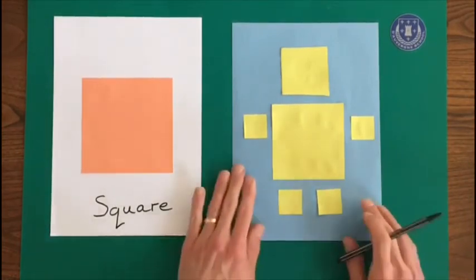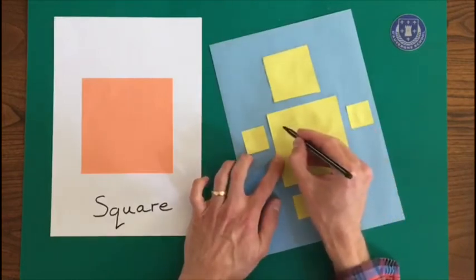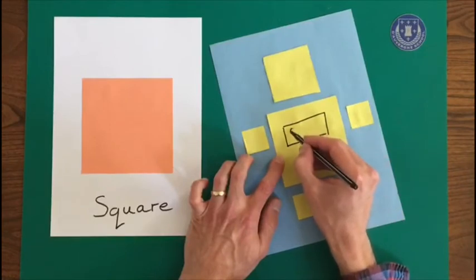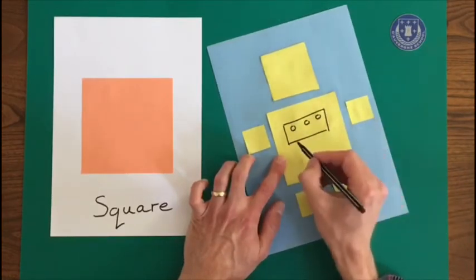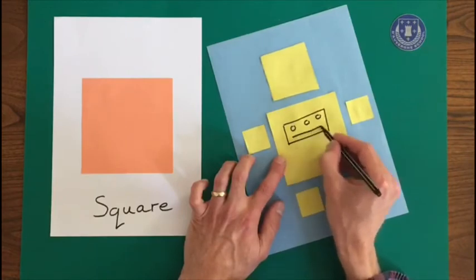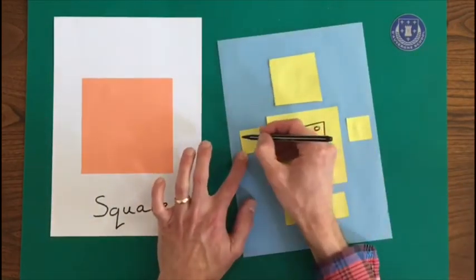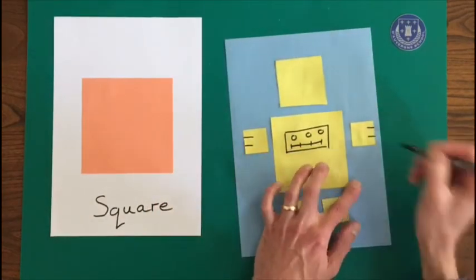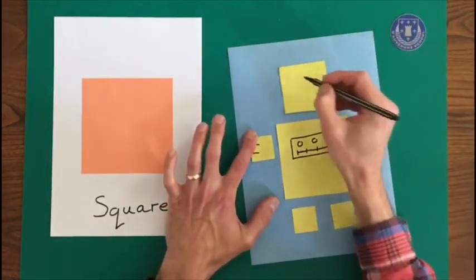And then I'll just take a pen and give him some robot features. So we'll give him a little control panel with some buttons. And maybe a little more controls. And shall we give him some fingers? Lovely.